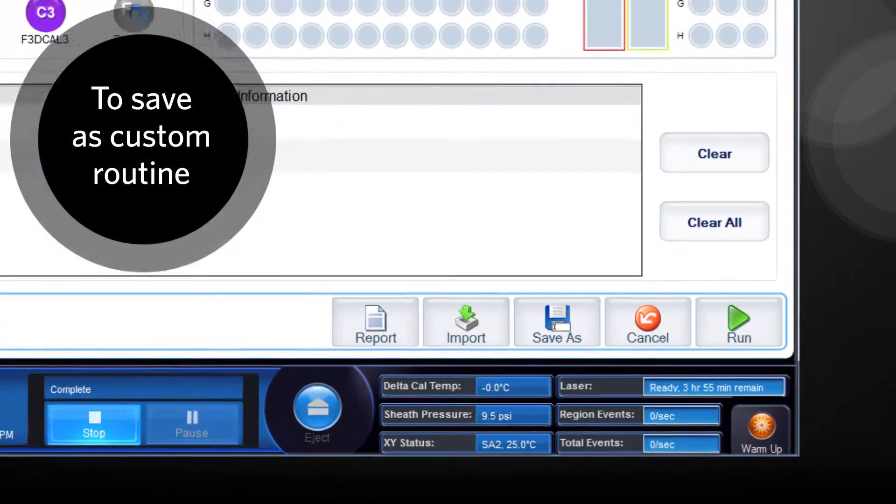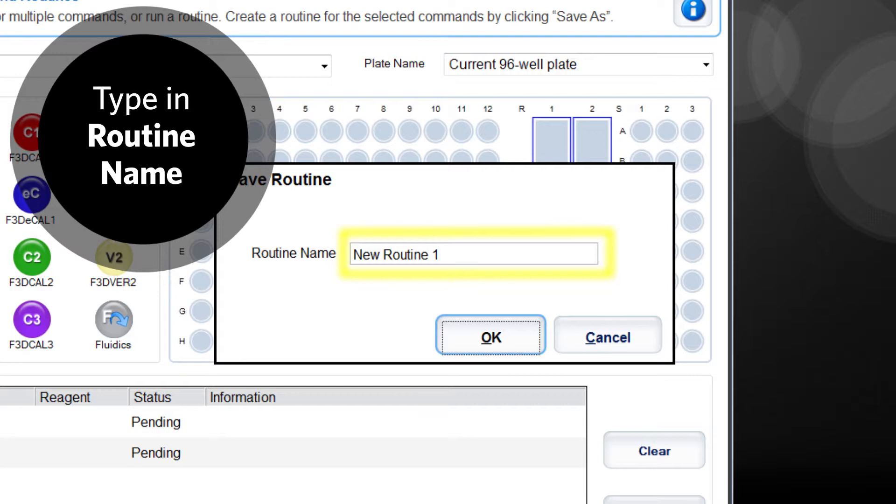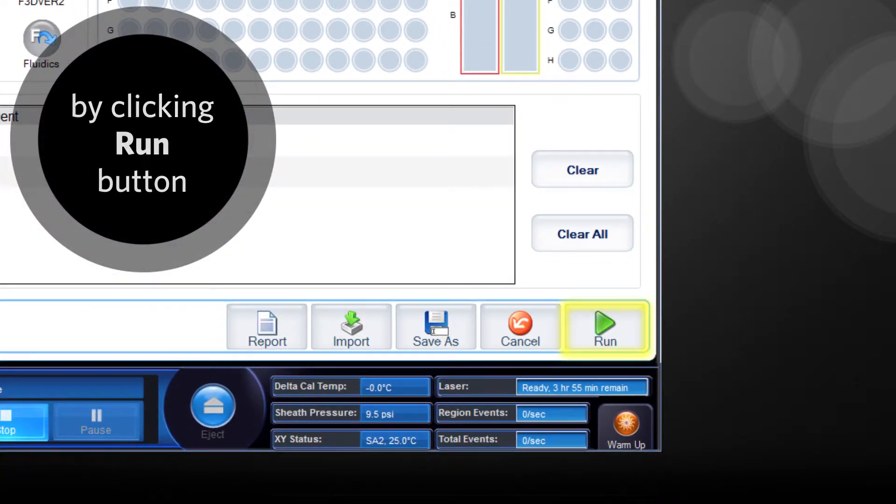The routine can be saved as a custom routine by clicking the Save As button and typing in a routine name, or can be run without saving by clicking the Run button.